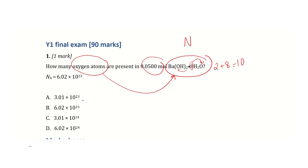I need to find the number of oxygen atoms given that the number of moles is 0.05, and I'm given Avogadro's constant. Looking at the options: A is 3.01 × 10²³, B is 6.02 × 10²³, C is 3.01 × 10²⁴, and D is 6.02 × 10²⁴. I can eliminate B and D automatically — the number of moles is 0.05, which means I'm going to get about half of 6.02, so B and D are clearly eliminated.